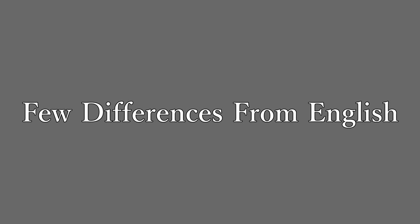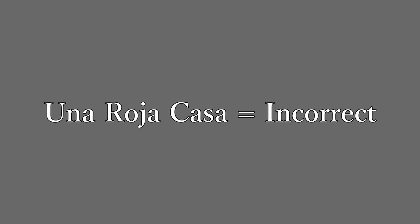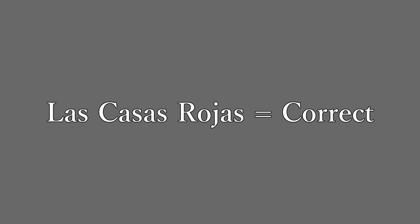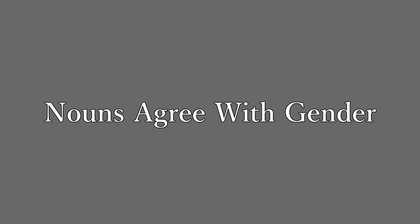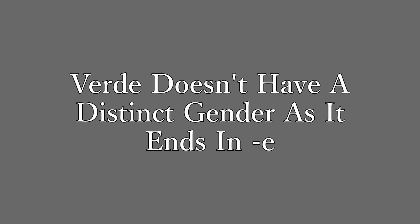Next up, we have adjectives. There are a few differences from English. First, the adjective comes after the word instead of before it — for a red house, you don't say una roja casa, you say una casa roja. Adjectives also agree with the plurality of a noun — the red houses wouldn't be las casas roja, but las casas rojas. Finally, adjectives agree with the gender — the red shoe is el zapato rojo. However, for the green shoe, it would be el zapato verde, and for a house, la casa verde — verde doesn't have a distinct gender as it ends in E.